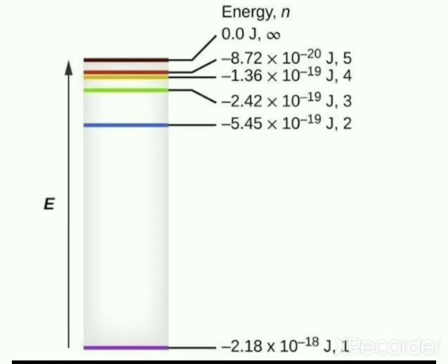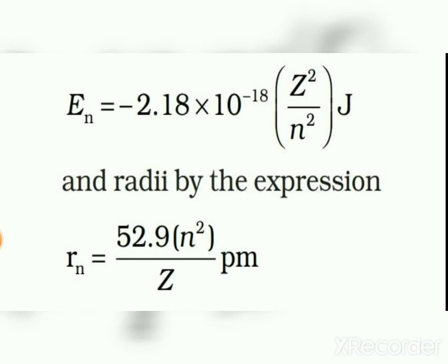When n = 1, the energy is the lowest, so the first orbit is the most stable orbit. Bohr's theory can also be applied to ions containing only one electron, such as He⁺, Li²⁺, and Be³⁺. For these species, energy is given by En = -2.18 × 10⁻¹⁸ × (Z²/n²) joules, where Z is the atomic number (He: Z=2, Li: Z=3, Be: Z=4). The radius is given by rn = 52.9 × n²/Z picometers.